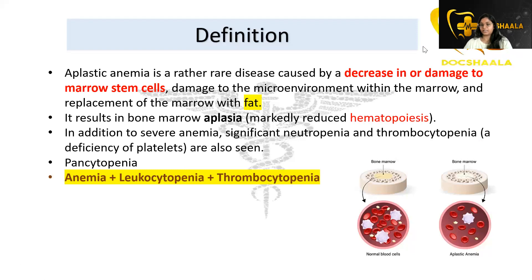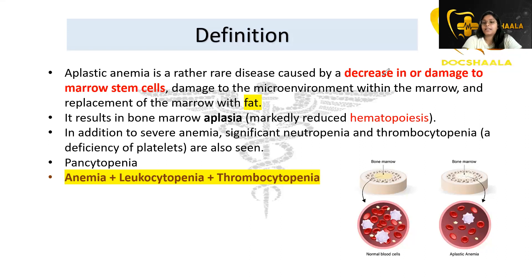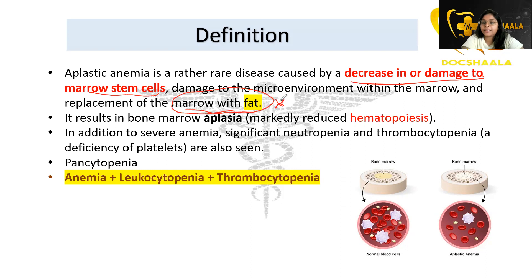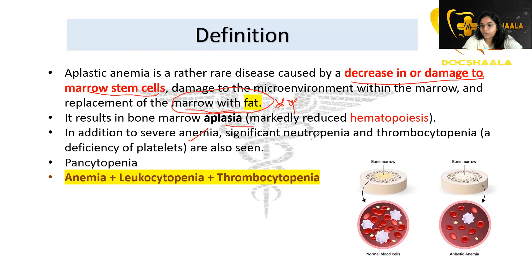Aplastic anemia is a rare disease. It is caused by decrease in or damage to the marrow stem cells — it is a stem cell disorder. It is caused due to damage to the microenvironment within the bone marrow, and the bone marrow is replaced with fat cells. This is an important finding in histology, resulting in aplasia of the bone marrow.